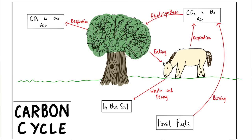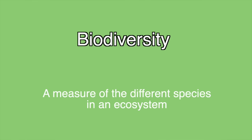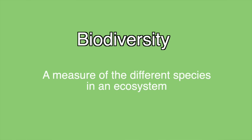Two very important processes that you must know about are the carbon cycle and the water cycle. I would recommend learning the process of how the whole loop happens for both. Finally, one more definition: biodiversity. Biodiversity is a measure of the different species within an ecosystem. It is healthy for an ecosystem to have lots of biodiversity because this means that the food chains and all the natural processes can occur as normal.